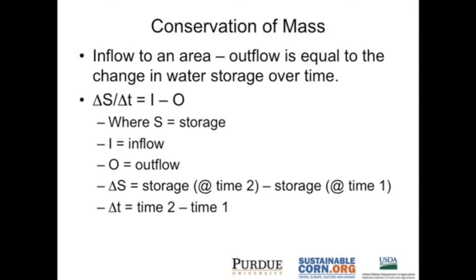DS/DT would be my change in storage, and I and O are my inflows and outflows. In the natural system, the water balance becomes a little more complex than just looking at a bathtub, but the concept is exactly the same. The first step to create a water balance calculation is to define the control volume.